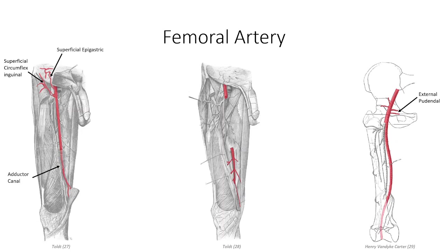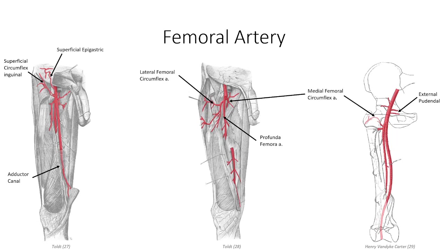Early on, the femoral artery gives off the profunda femoris, which lies between the anterior and medial compartments and supplies the majority of blood to each. Two branches off the profunda femoris wrap around the proximal portion of the femoral neck: the medial and lateral femoral circumflex arteries, supplying blood to the intertrochanteric mass of bone and the proximal femoral head. The lateral femoral circumflex provides three distinct branches: the ascending branch supplying the region surrounding the hip, the transverse branch specific to the proximal head of the femur, and the descending branch supplying the lateral part of the anterior compartment. The profunda femoris also gives off three to four perforating branches that penetrate the medial compartment to provide vascular supply to the posterior compartment.